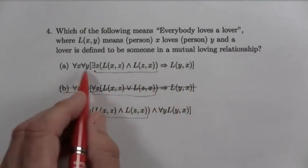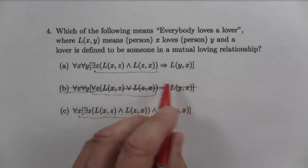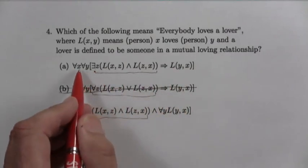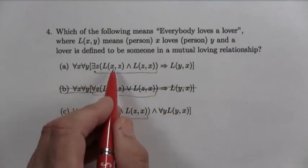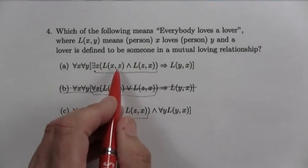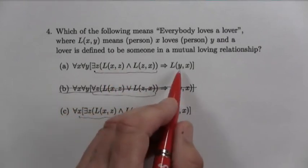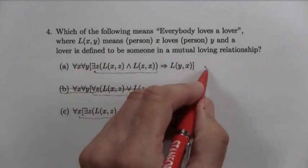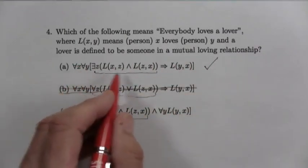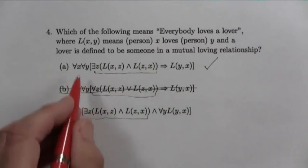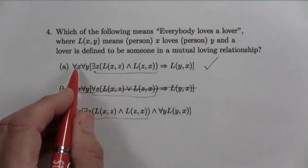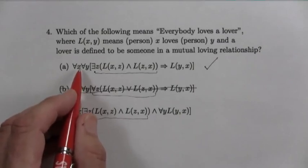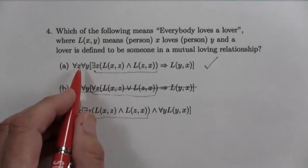Now, the y doesn't come in here, so that the for all y is to do with this part. So it says take any person x. If that person is a lover, then every person loves them, if they know them. So that actually is the correct one. Okay? All people love a lover. Of these three, that's the one. You know, you could argue about whether that's the absolute best interpretation, but out of these three, it's certainly a correct one. And so it's the one here.